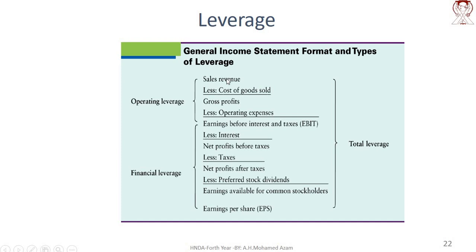If you look at the income statement: we start with Sales and Revenue, then Cost of Goods Sold, then Gross Profit. Then comes Operating Expense, leading to Earnings Before Interest and Tax — this is where Operating Leverage applies. From EBIT, we subtract Interest to get Net Profit Before Tax, then After Tax. The Earnings available for Common Stockholders divided by Number of Shares gives Earnings Per Share. This is Financial Leverage.